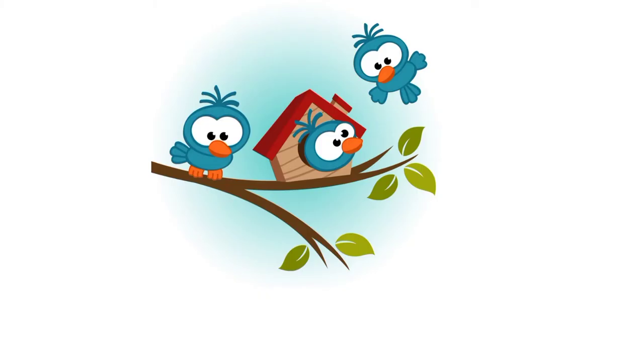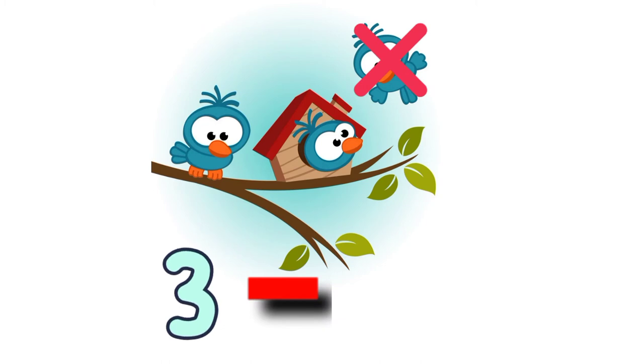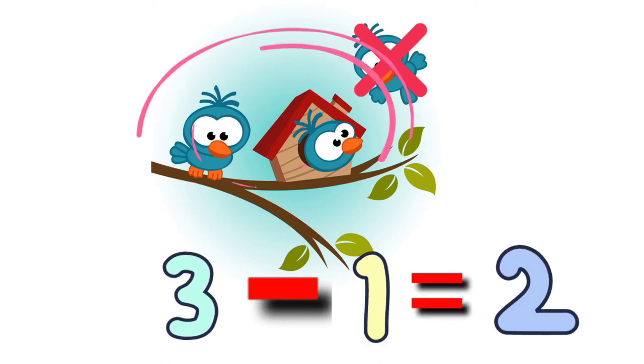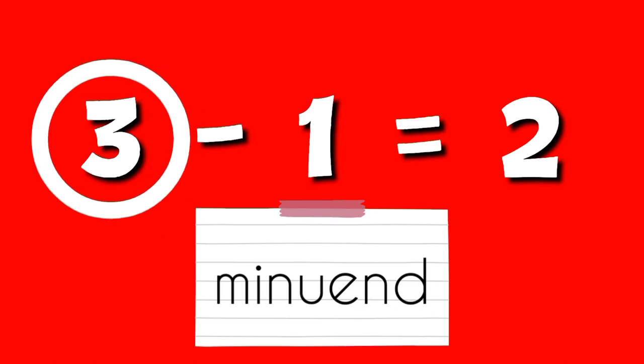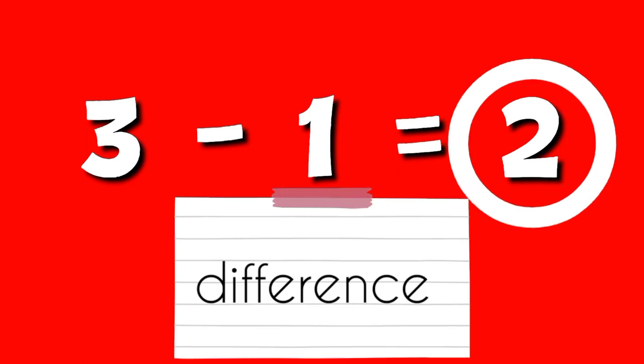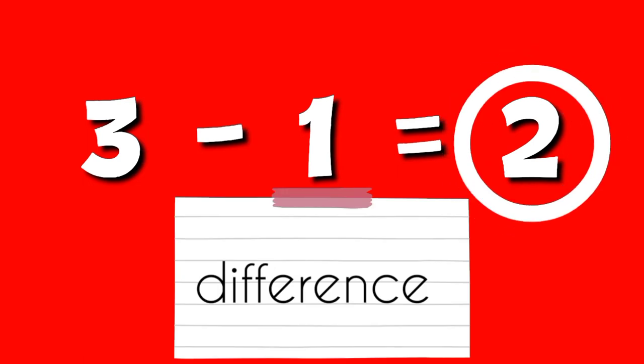Or we can say, three take away one equals two. Three minus one equals two is a subtraction sentence. Three is the minuend, the number from which we subtract. One is the subtrahend, the number which we subtract or take away. And two is the difference, the answer in subtraction.